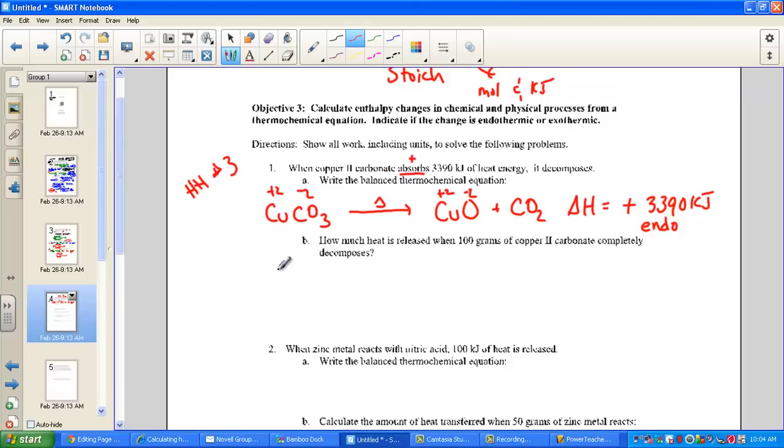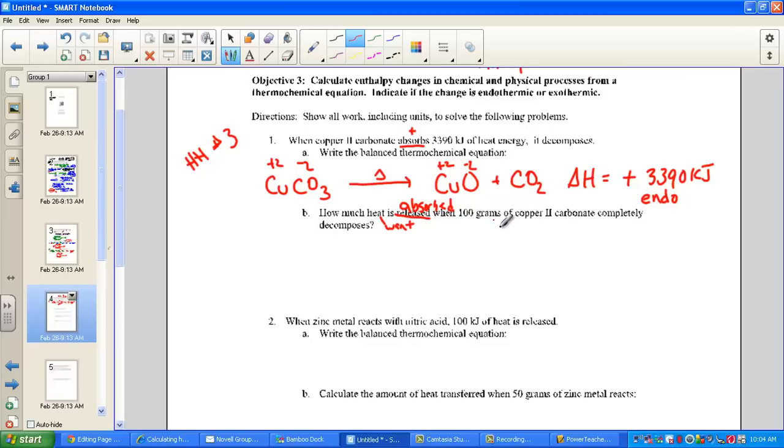The stoichiometry part of our equation in letter B. How much heat is absorbed when 100 grams of copper 2 carbonate completely decomposes. This is a mistake on my part. Heat is going to be absorbed, we know that from the original word. Please, with me, take your pencil, cross off released, and make this match to the previous question. Heat will be absorbed during this decomposition.